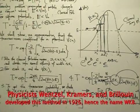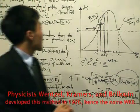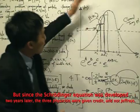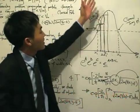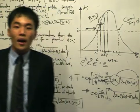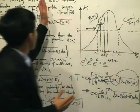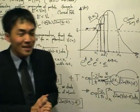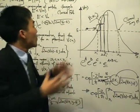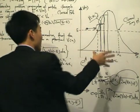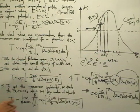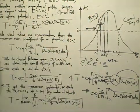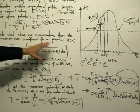This is called the WKB method because it was formulated by three physicists — Wentzel, Kramers, and Brillouin — in 1926. They were investigating evanescent waves, which exist in the classically forbidden region. It is worth noting that in 1923, three years before WKB, the mathematician Harold Jeffries independently found approximations to a linear second-order differential equation of the Schrödinger equation type, but was not given credit because he did not recognize its applications in quantum mechanics.